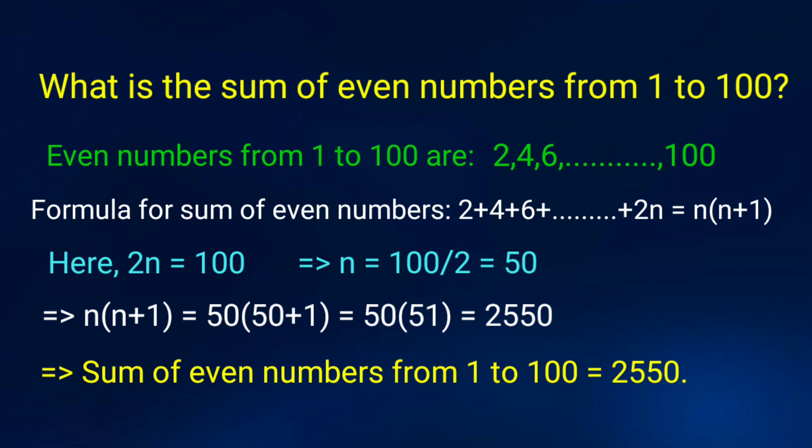Therefore, sum of even numbers from 1 to 100 is 2550.